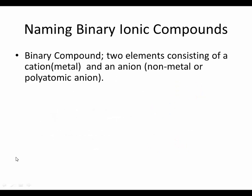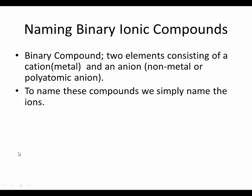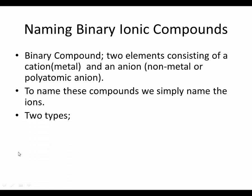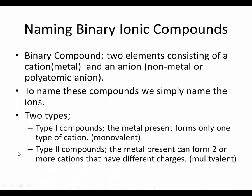Two elements consisting of a cation — which is usually a metal — and an anion, a non-metal or a polyatomic anion. To name these compounds, we simply name the ions. Type 1 compounds: the metal present forms only one type of cation — monovalent. Type 2 compounds: the metal present can form two or more cations that have different charges — multivalent.